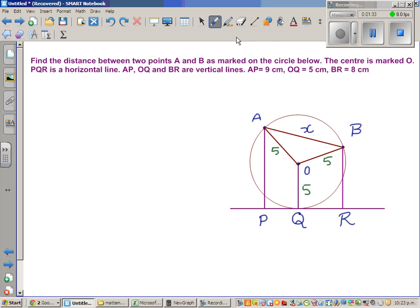Now AP is given to be 9. I'm going to join a line segment, a perpendicular line segment to Q and a perpendicular to BR. Say this is S and say this is T. So if OQ is 5, SP is also 5.